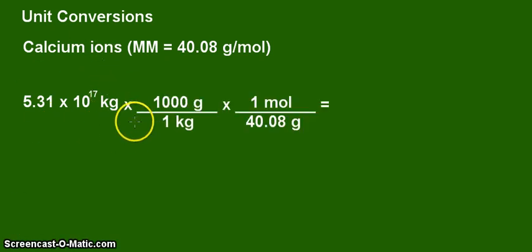So we simply have written here the things I've mentioned earlier. We start with the mass, that's 5.31 times 10 to the 17 kilograms. And we need to convert that into grams by using this conversion factor here, and that is 1,000 grams is 1 kilogram.